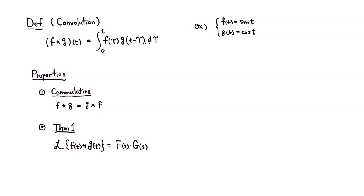It's a strange definition, but it has the following properties. The first one: convolution is commutative, which means that f star g is exactly the same thing as g star f. The second — listed as Theorem 1 — is this: if you apply the Laplace transform to the convolution of f and g, this turns into the Laplace transform of f times the Laplace transform of g, which is very convenient when taking a Laplace transform.